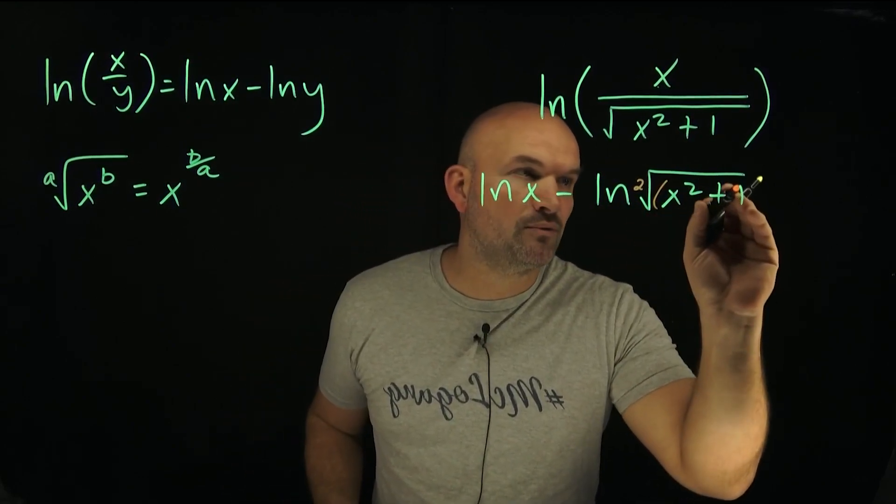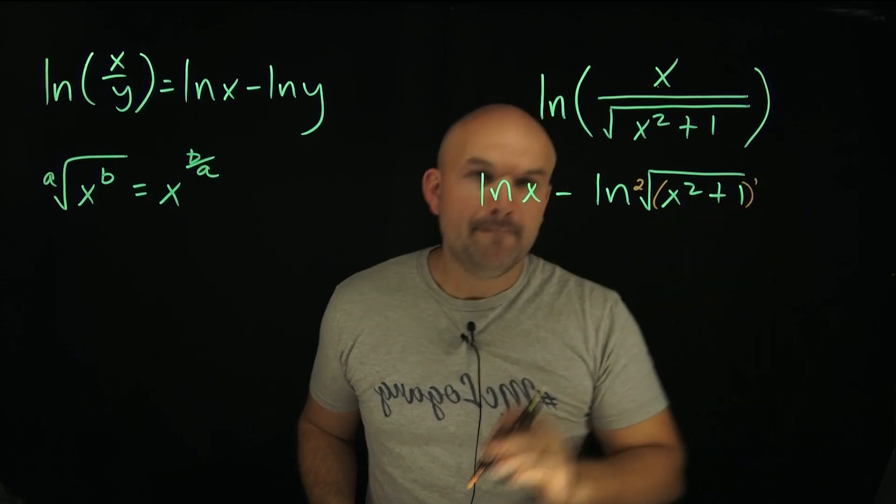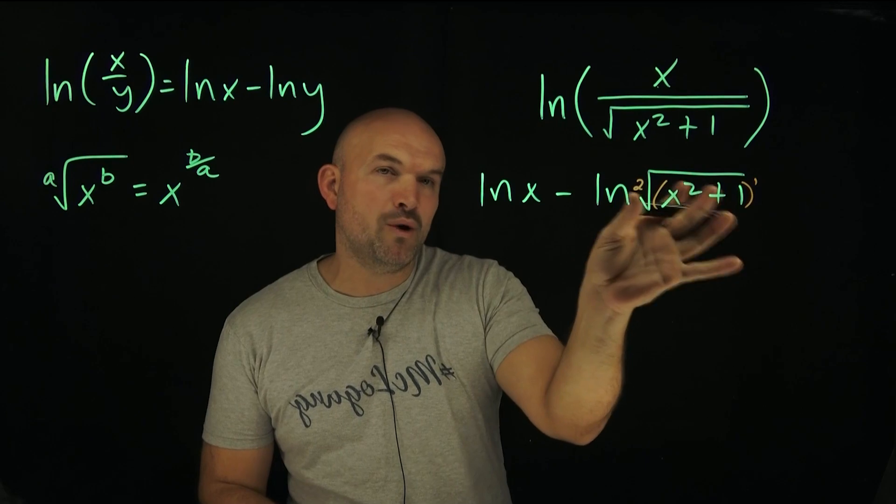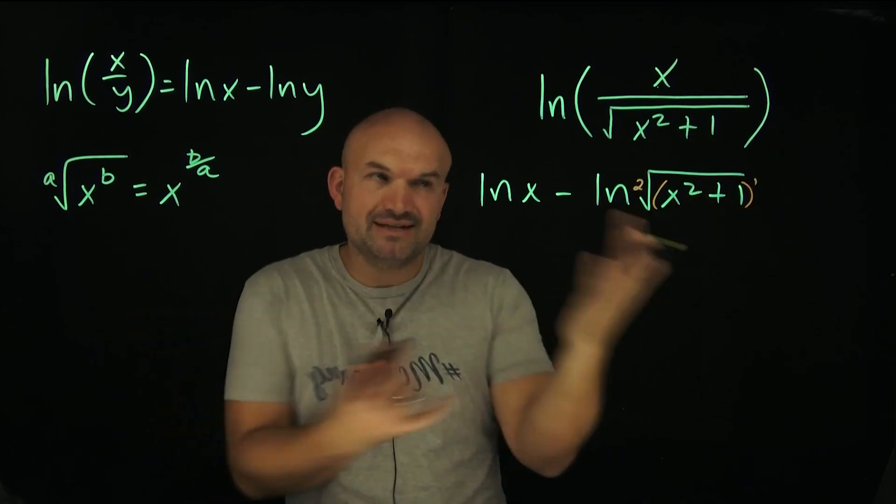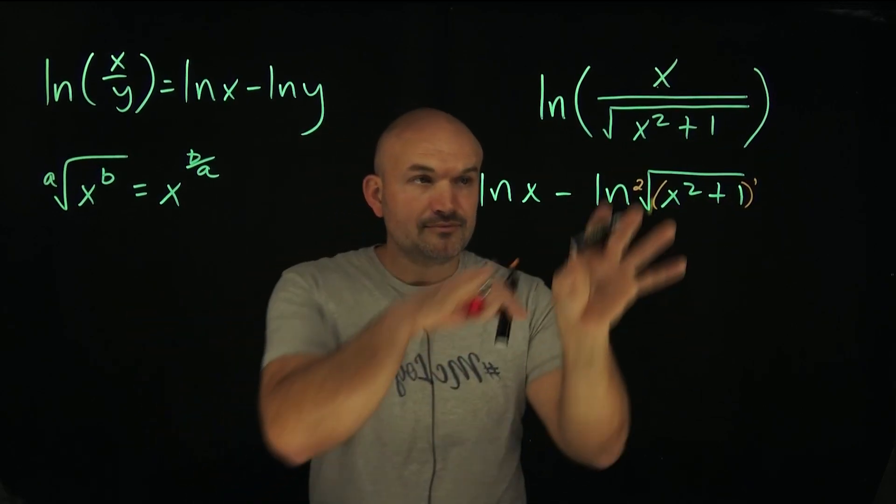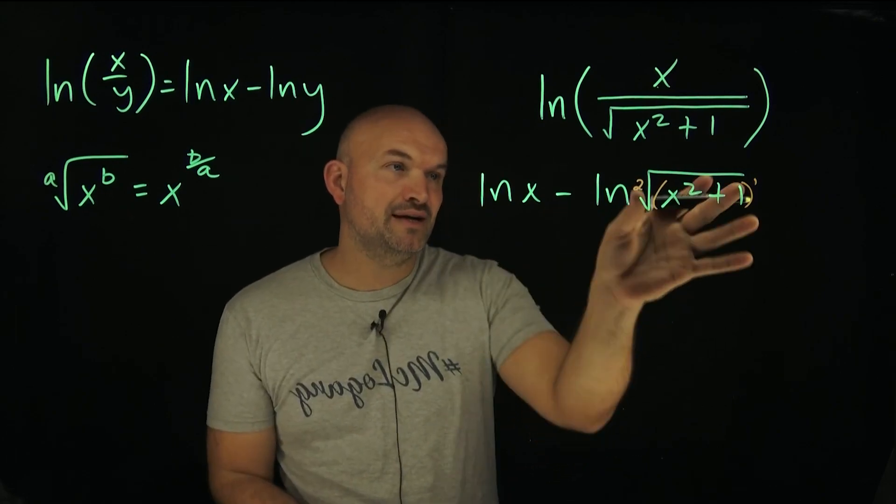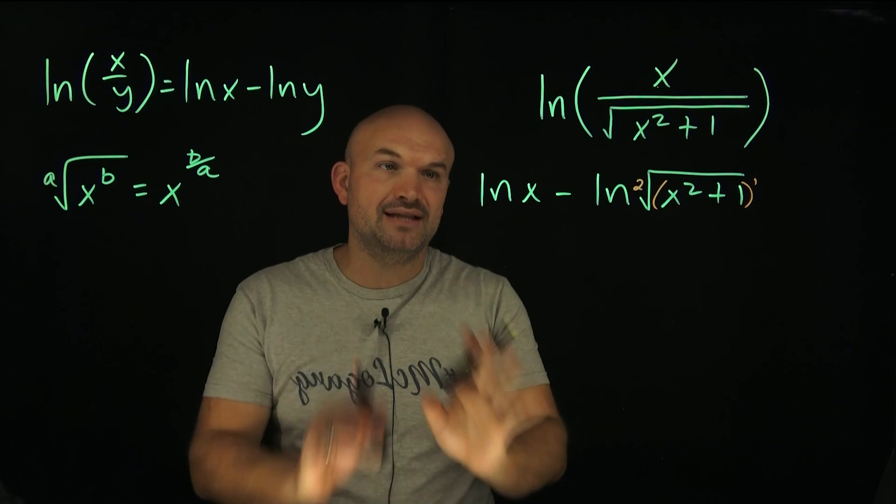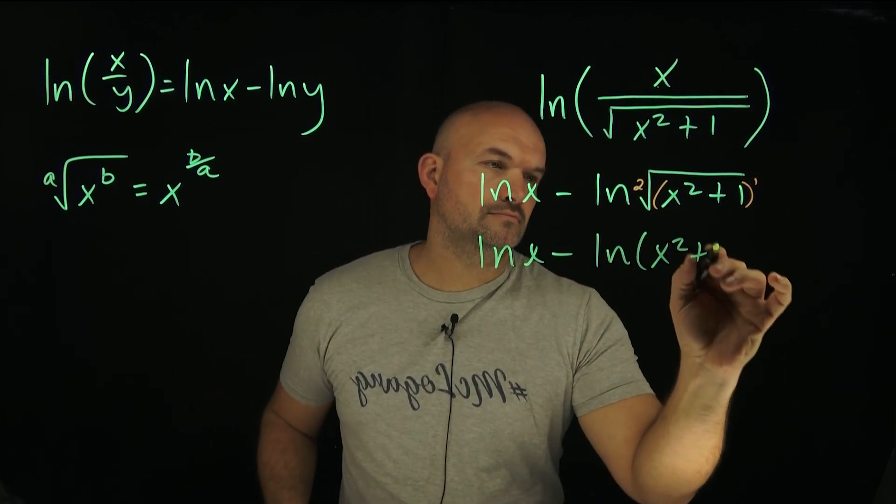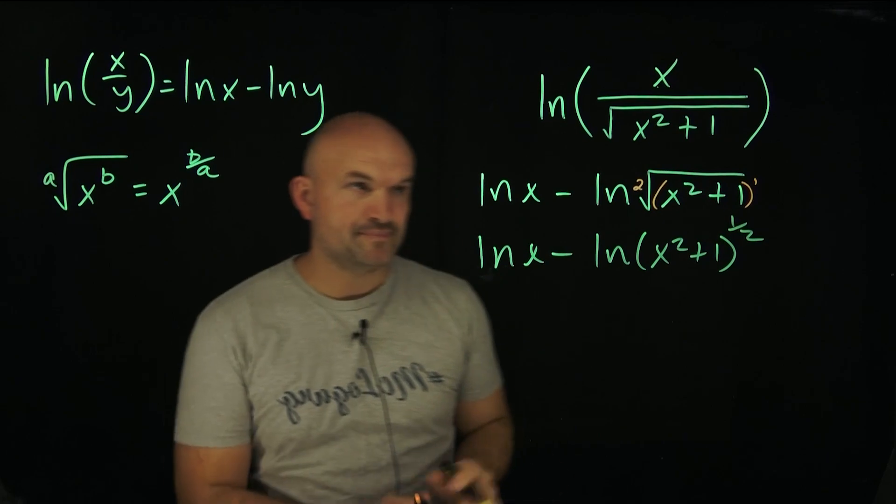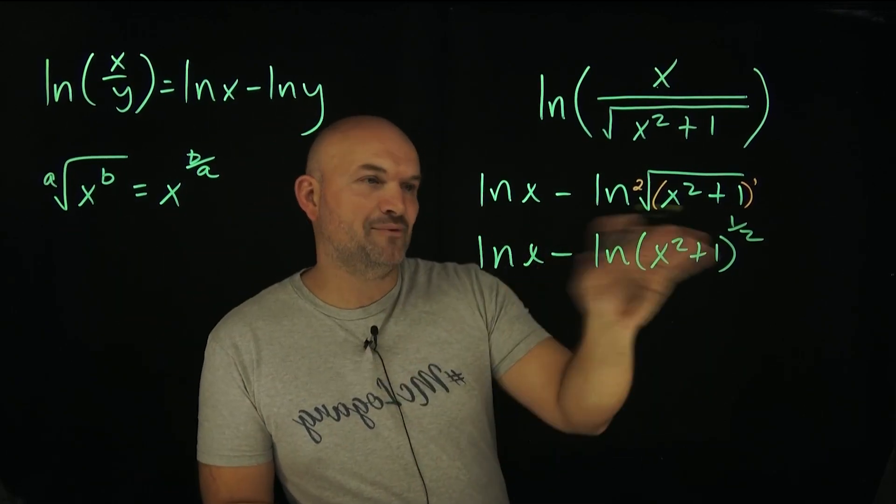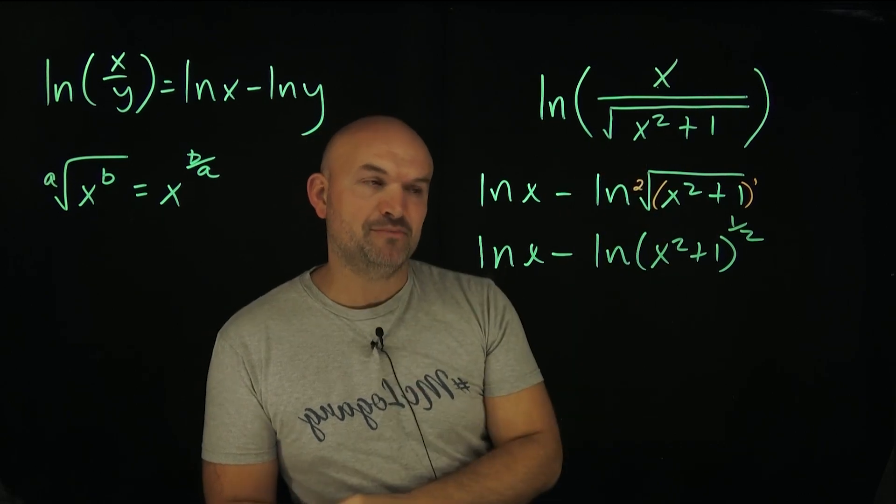And over here, a lot of times we don't write the parentheses and this power. But since there's no parentheses or power in there, we can assume that this whole quantity is being raised to the first power. So now, what I can do here is rewrite this as a rational power. That's going to make my life a lot easier. Using this rational power rule, I went ahead and rewrote our radical as a rational power.